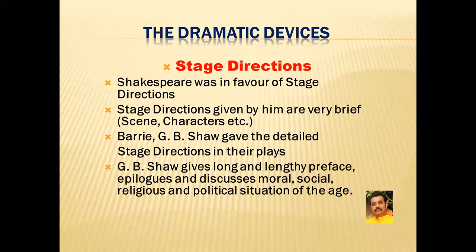William Shakespeare was in favor of stage directions. The stage directions given by Shakespeare are very brief — they tell us about the scene and the characters who are to appear in the act or scene. Dramatists like Barry and George Bernard Shaw provide detailed stage directions. Shaw also gives a long and lengthy preface to each of his plays, discussing frankly the moral, social, religious and political problems of the day to give a better understanding of the play.